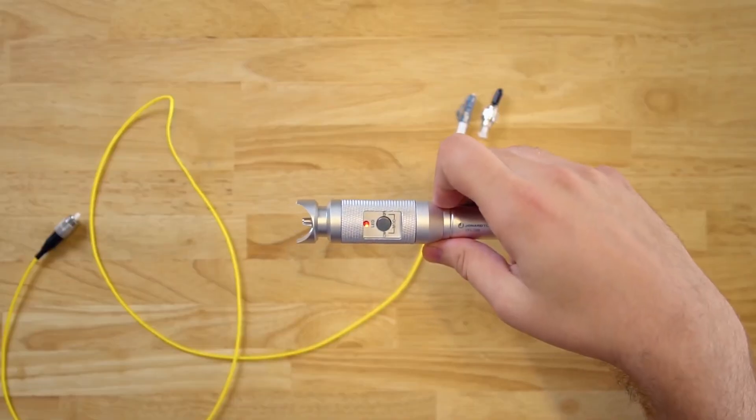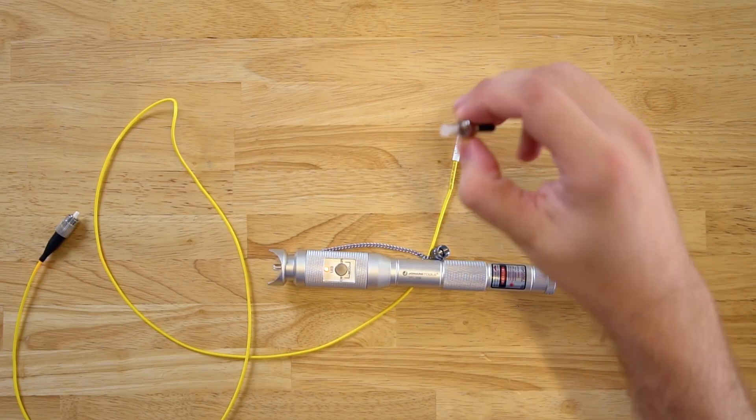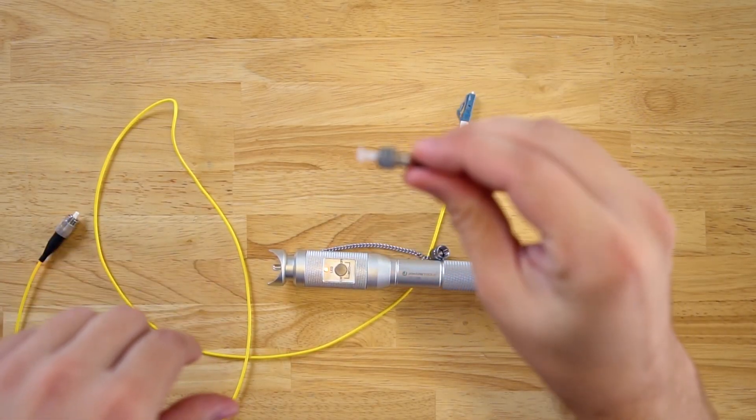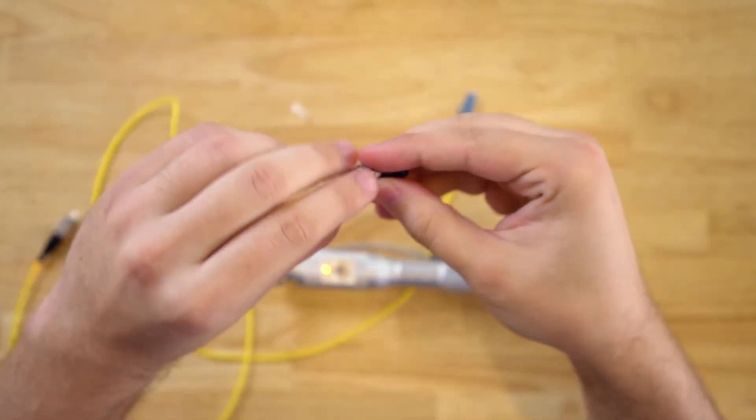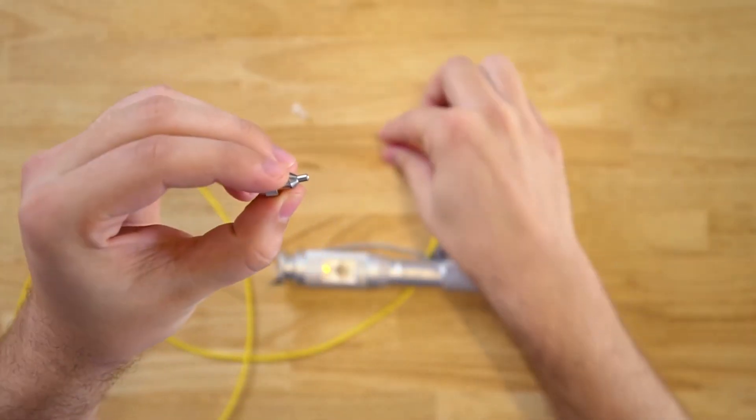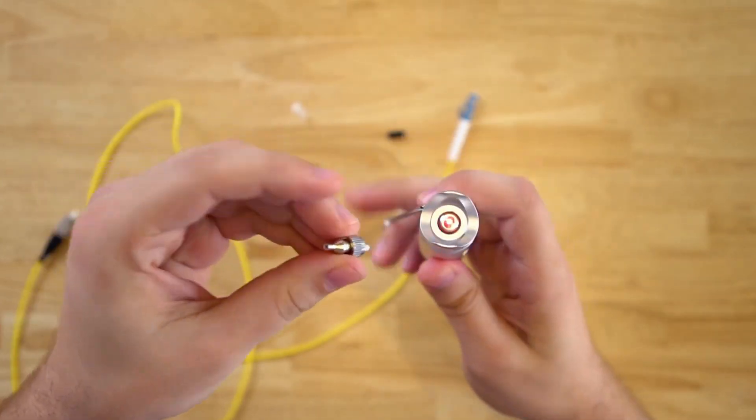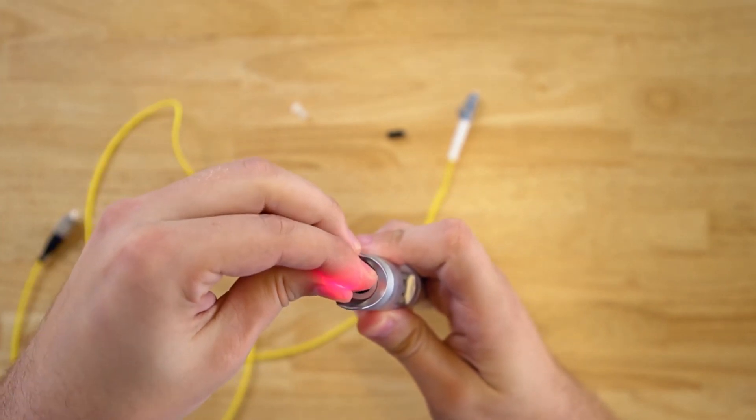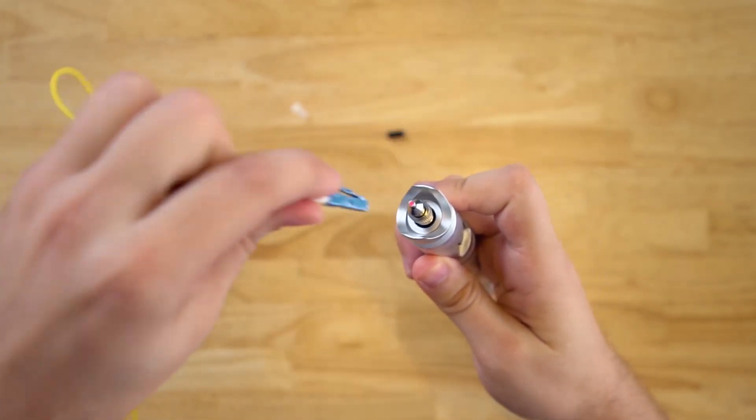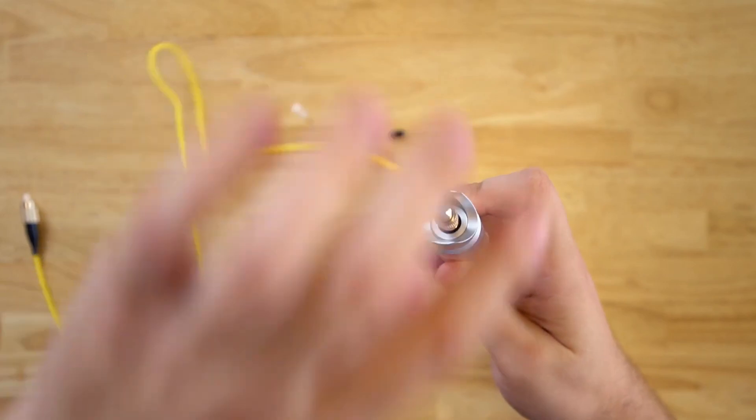If you're using an LC connector, you'll have to use our VFL25125, which you can do by removing both protective covers, inserting it into the top of the unit, and then connecting the LC connector into the adapter.